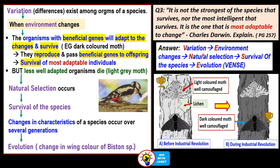We are going to use the format VANS — the acronym VANS. First talk about variation, then the environment change, then natural selection occurred that led to the survival of the species. And over a long period of time, evolution occurred where there are changes in the physical characteristics of the species.